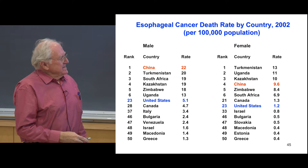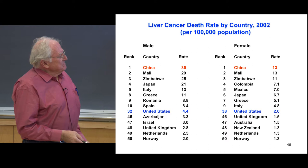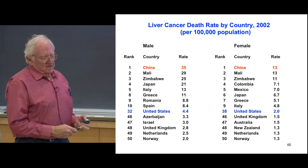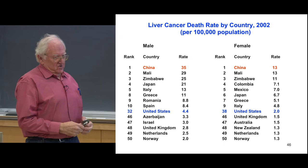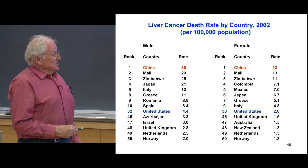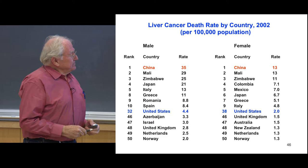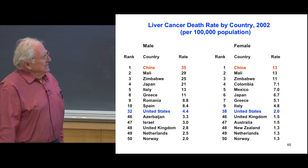Liver cancer — China is number one. Almost certainly we think this is due to either aflatoxin exposure, which is abundant in China, and also the nitrosamines that are formed from nitrite. The U.S. is down fairly low for liver cancer. Also, viruses are responsible for the high rates in parts of Africa.